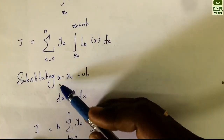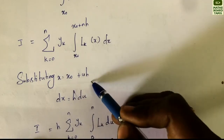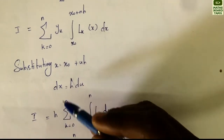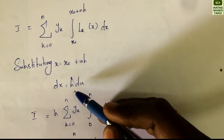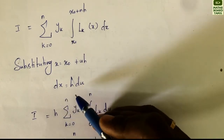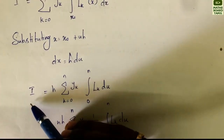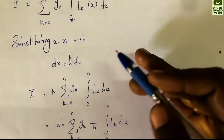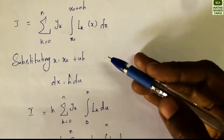Next, we apply the substitution x = x0 + uh. So x0 + u replaces x throughout. When x = x0, u = 0, and when x = x0 + nh, u = n. The differentials transform accordingly under this substitution.